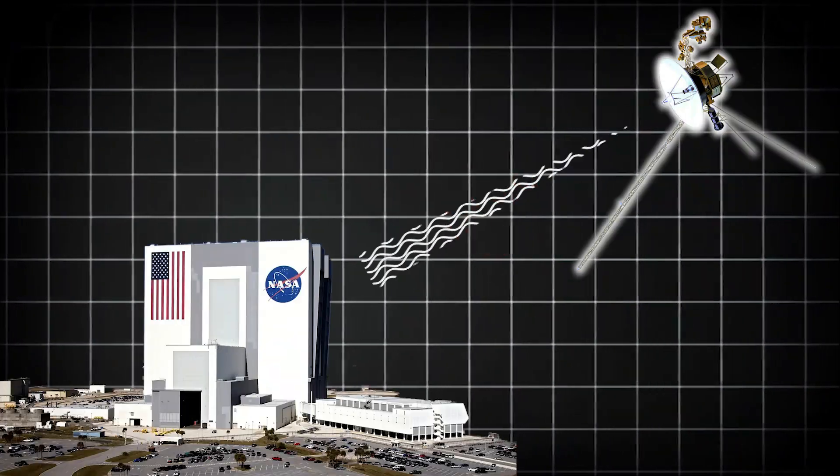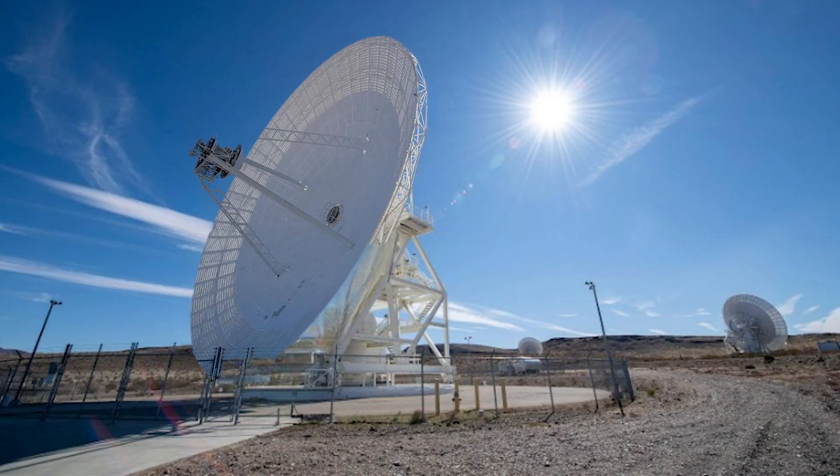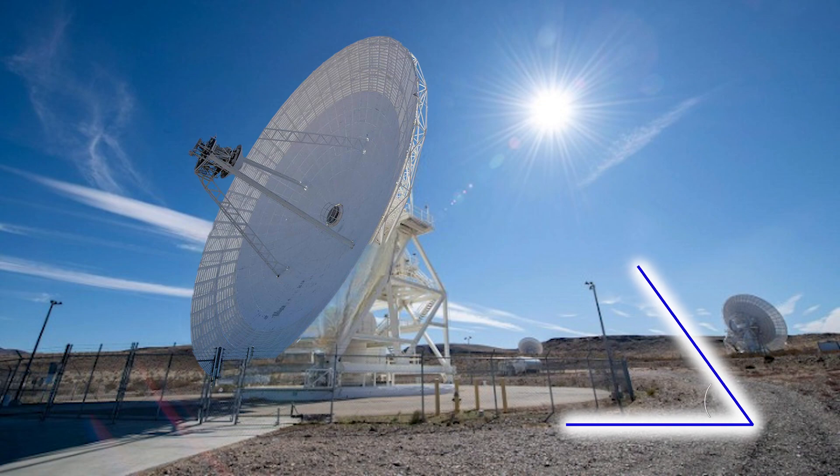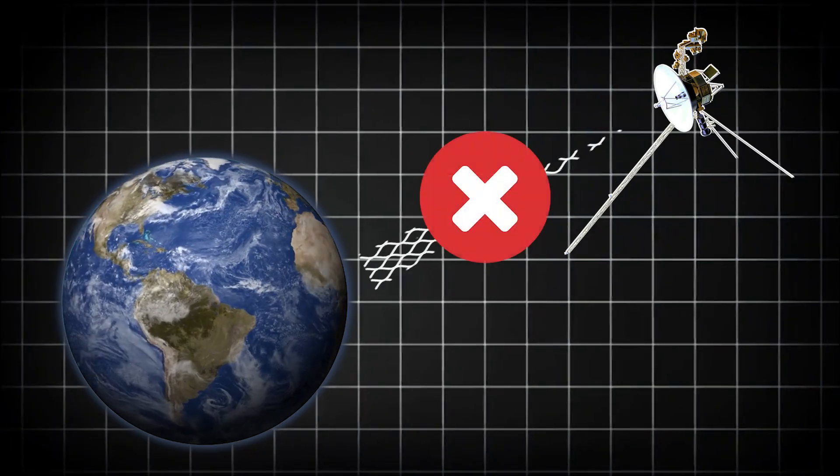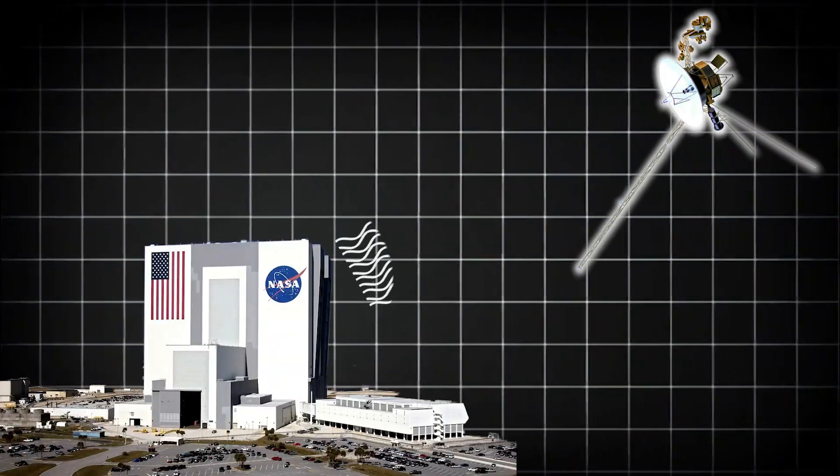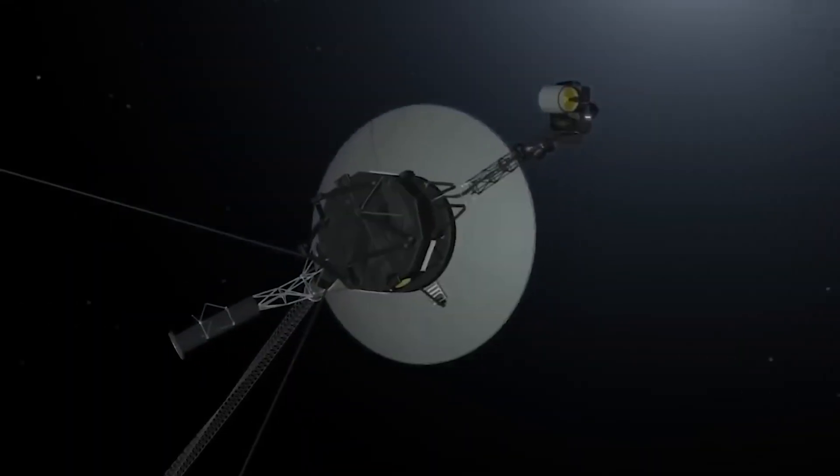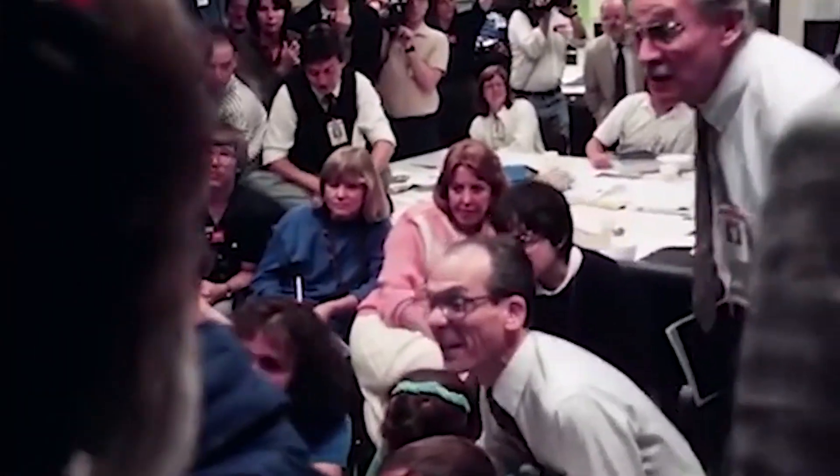Then came the glitch. In mid-2023, contact was lost. A small misalignment in the antenna, just a couple of degrees, cut Voyager off from Earth. The team sent a powerful signal to correct it. And after nearly two full days of waiting, the spacecraft responded. Everything was working. Crisis averted.